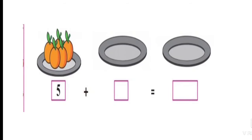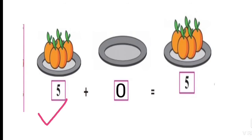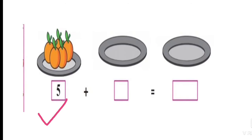How many oranges are there in the plate? There are five oranges. We had five oranges and we add zero oranges, so we get five oranges. When we add zero to five, we get five.